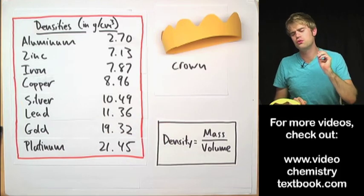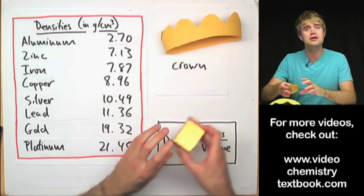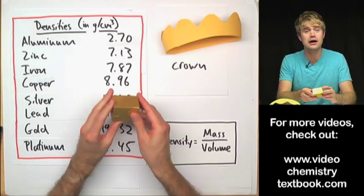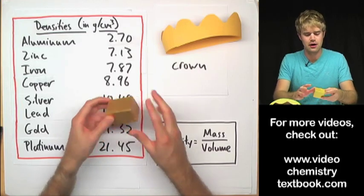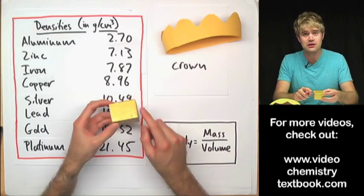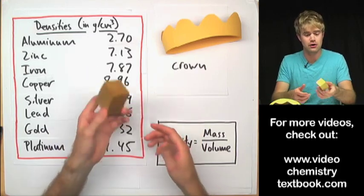What Archimedes would really love to do is he'd love to be able to take the crown and melt it down and then he could take the melted metal and make it into a nice block like this that has this very regular structure. And then he could just measure the length and the width and the height, multiply them all together and figure out what the volume is.